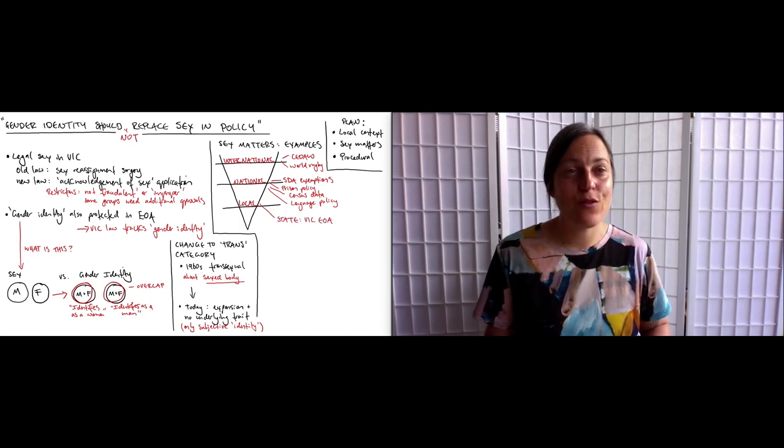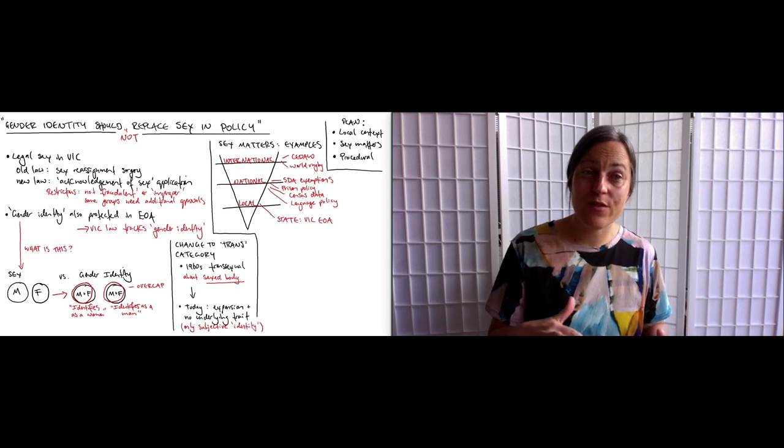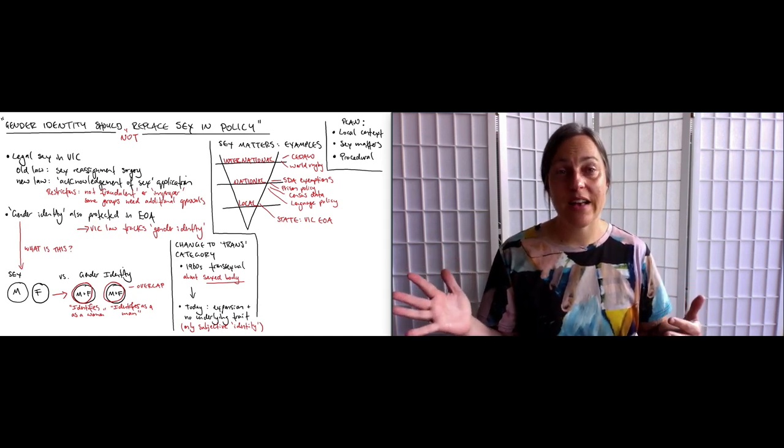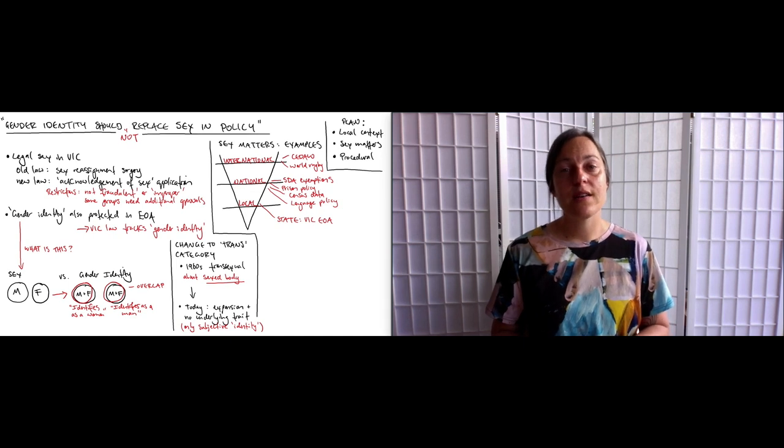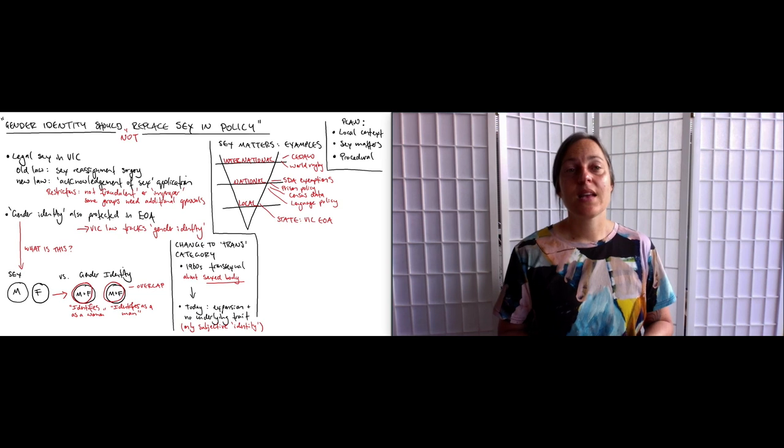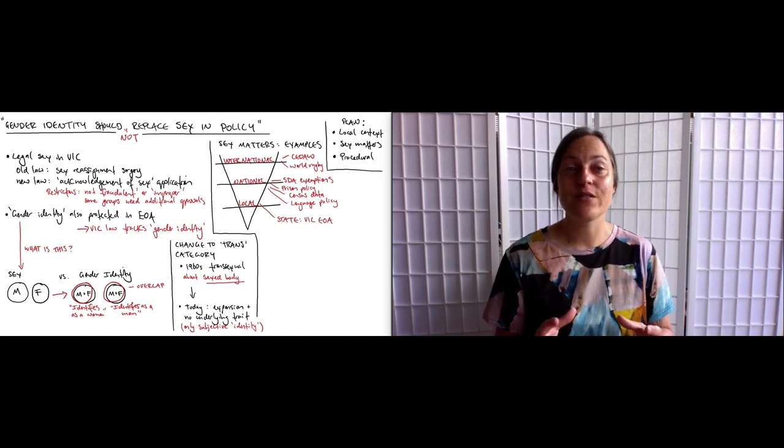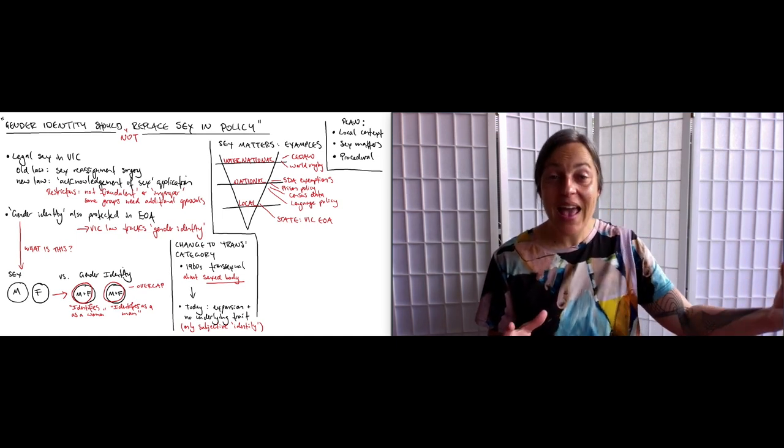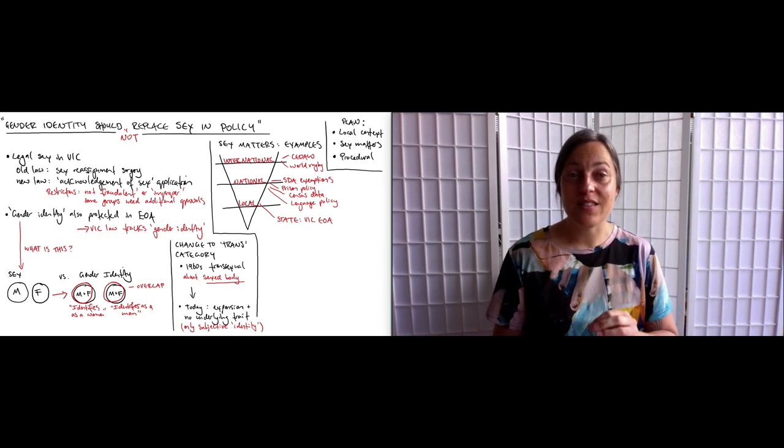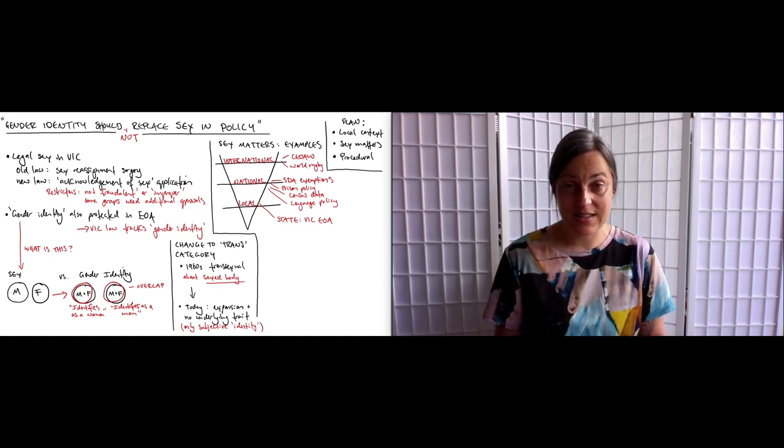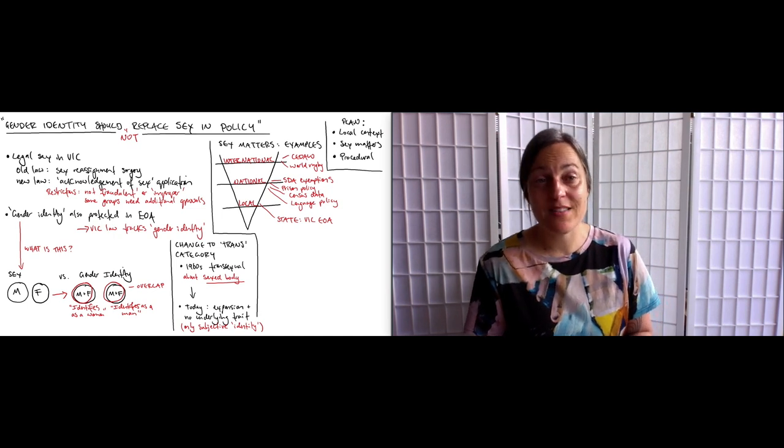Dropping down again to the state level, there is the Victorian Equal Opportunity Act, for short the EOA. The structure is roughly the same here as for the national SDA. The state EOA protects against discrimination on the grounds of a number of protected attributes, of which sex and gender identity are included. As with the SDA, sex is not defined. The EOA also offers exemptions where it is okay to exclude on the basis of sex, but the only case where it is noted as okay to exclude on the basis of sex and gender identity is elite sport. That implies that for all the other sex exemptions, it is not okay to exclude on the basis of gender identity. So just as for the SDA, important exemptions that serve women's interests stand to be compromised by being made mixed sex.